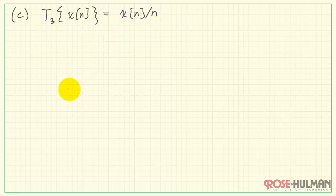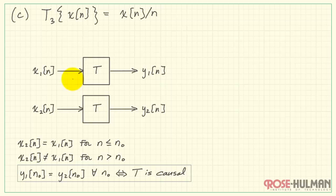Here we have T3. As before, we pass that through our system and evaluate at n0.